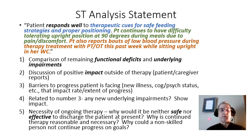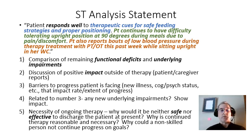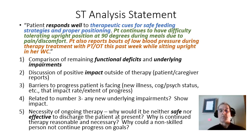Number five: the necessity of ongoing therapy services. Why would it be neither safe nor effective to discharge the patient from speech therapy at this time? It appears there are PT and OT concerns, but it's not clear whether speech therapy is ongoingly needed. Why is continued therapy reasonable and necessary? The therapist doesn't get into details about the necessity of their ongoing skill. And why could a non-skilled person not continue progress on the goals? Based on what's written — that the patient responds well to therapeutic cues for safe feeding strategies and proper positioning — it appears a non-licensed, non-skilled person could be taught to cue and position the patient.